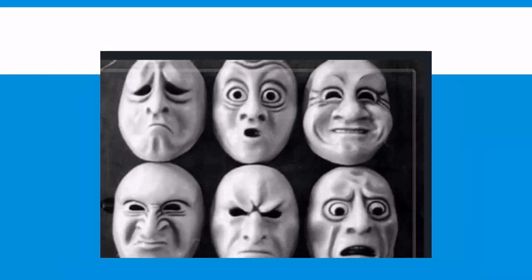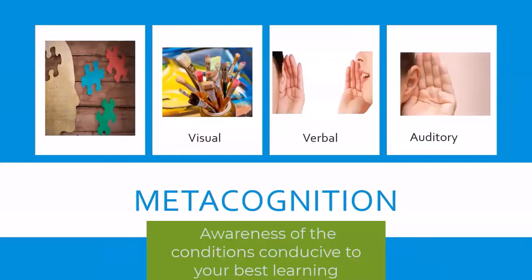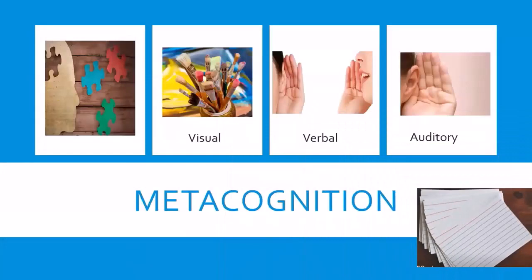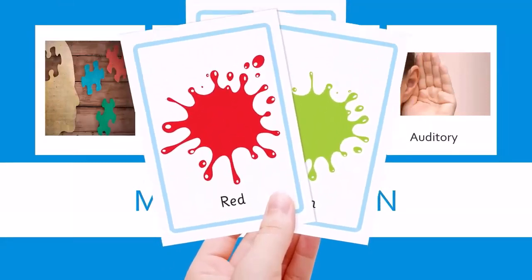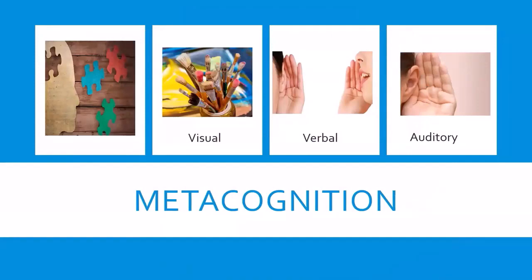Metacognition — monitoring your learning: metacognition is an awareness of the conditions conducive to your best learning, specifically your preferred medium of learning, whether visual, verbal, or auditory; your specific learning strategies for enhancing understanding and retention, such as creating flashcards; and your emotional response to the learning material, both positive and negative. By understanding yourself metacognitively, you can root out ineffective study habits and find effective study strategies.